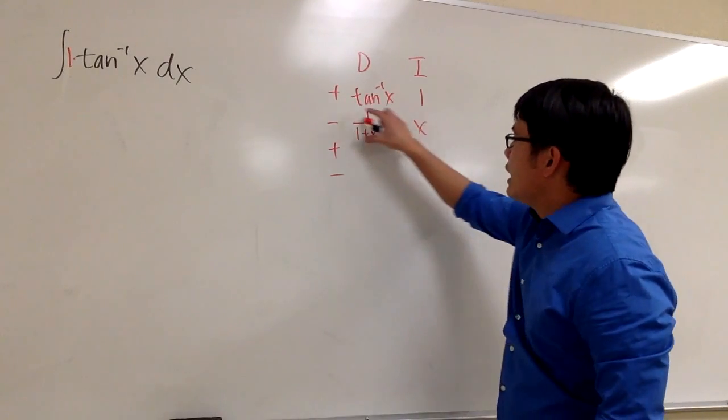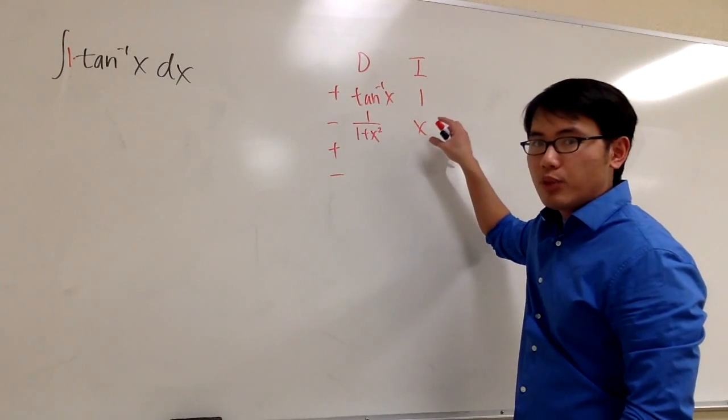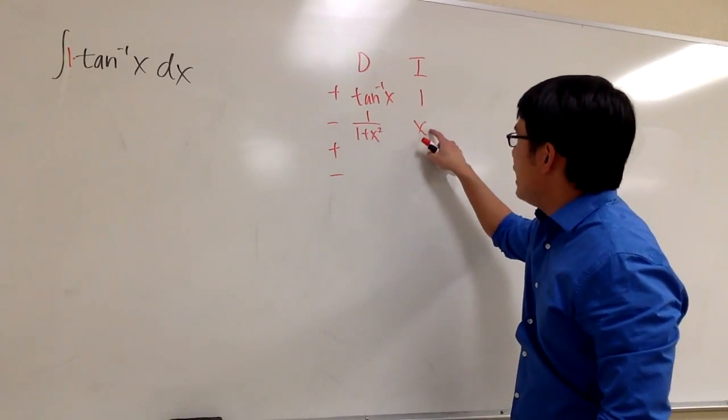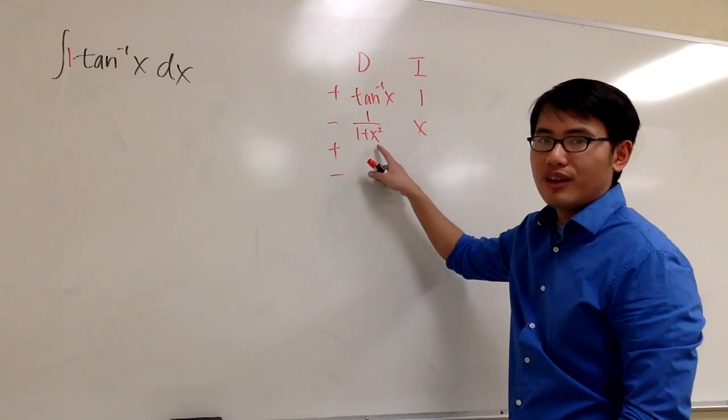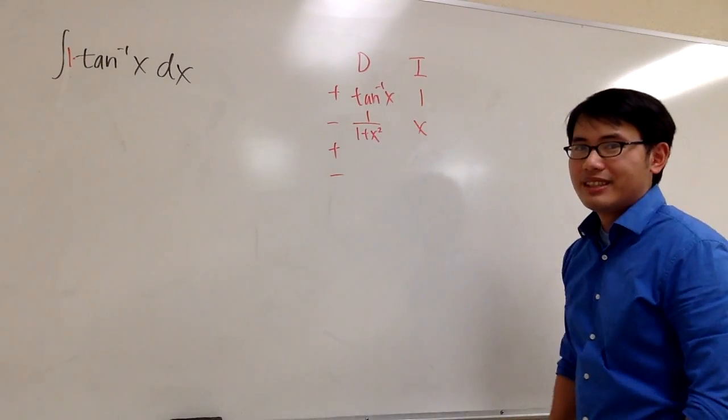And the answer for that is, we can stop. Because remember, each row represents an integral. The product of this row is x over 1 plus x squared. And that's something that we know how to do. So we stop right here.